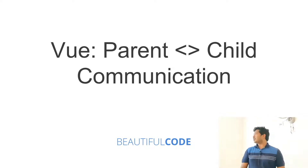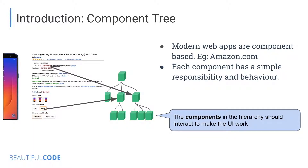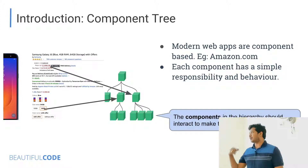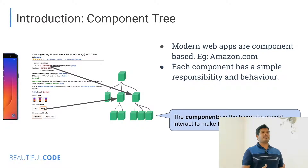Today I'm going to talk about parent-child communication in Vue Framework. In modern web apps, the whole interface is constructed of a hierarchy of components, where each component has specific responsibilities and simple behavior, and all of them make up the beautiful UI. For example, in this snippet from Amazon, the price component is dependent on the variant selected — 32 GB or 64 GB — so some sort of communication must happen between the two components.